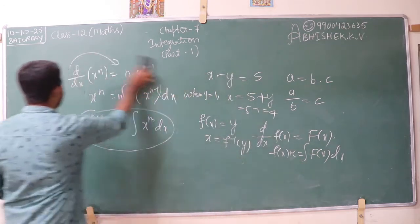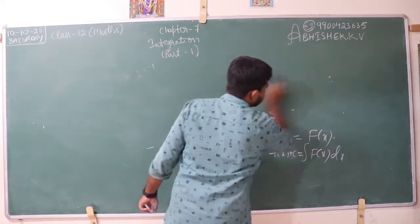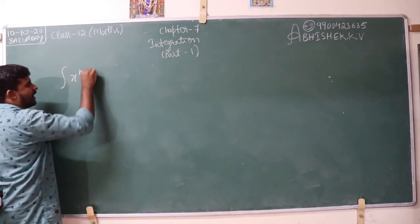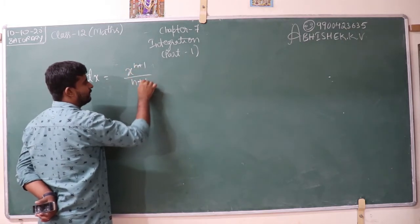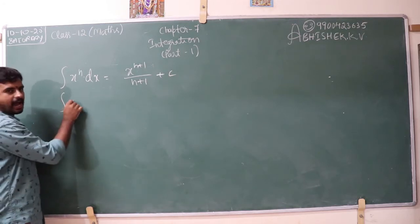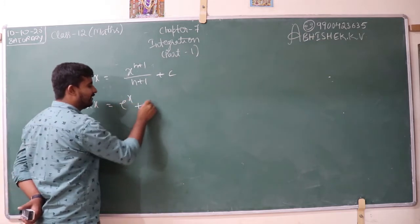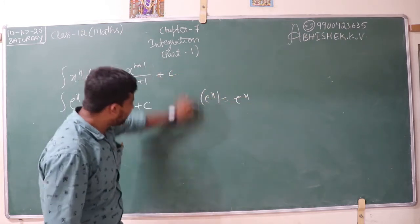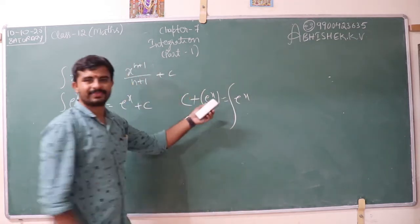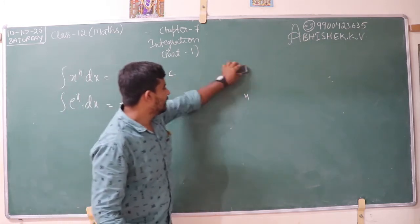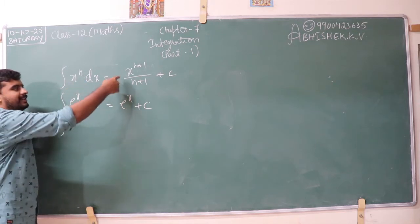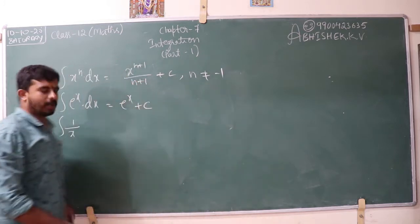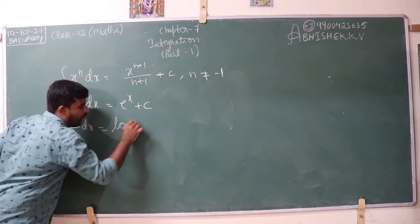Please note down the results. The first result: integral of x to the power n dx equals x to the power n plus 1 divided by n plus 1, plus c. Integral of e to the power x dx equals e to the power x plus c. Why? Because the differentiation of e to the power x is e to the power x. If I convert this to the RHS, it becomes integration — still e to the power x — but we add c because it is an indefinite integral. Note: in the formula for x to the power n, n should not equal minus 1.